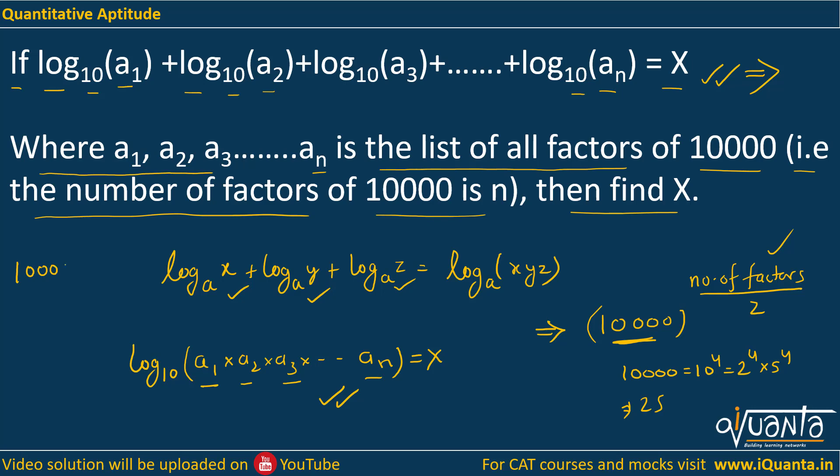The product of factors of 10,000 will be 10,000^(25/2). Since dividing by 2 means taking the square root, and √10,000 = 100, this becomes 100²⁵. Now we can replace a₁ × a₂ × a₃ × ... × aₙ with 100²⁵, so we get log₁₀(100²⁵) = X.